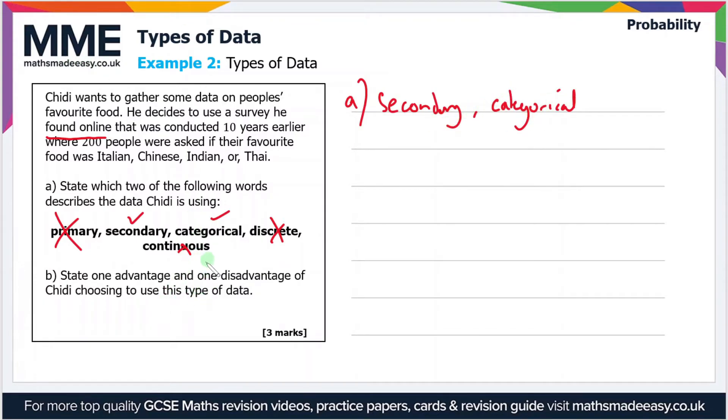So moving on to part B, to state one advantage and one disadvantage of Chidi choosing to use this type of data. Well, if it's secondary data, then he doesn't have to gather it himself, so it's more convenient, it's cheaper, less time consuming.